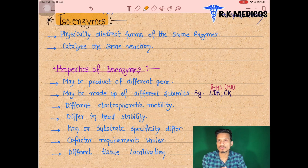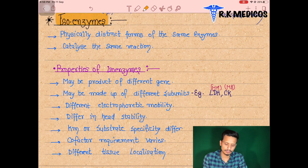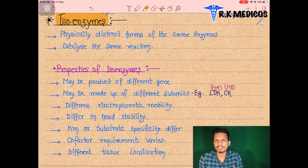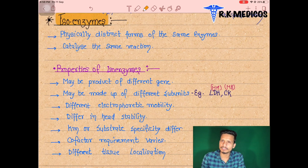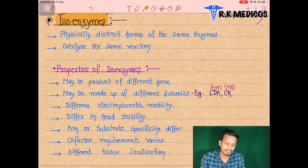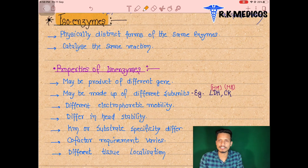Clinical enzymes is a very important topic for future doctors and for diagnostic criteria. Suppose a patient is having different types of diseases like myocardial infarction in the heart, or liver inflammation like hepatitis, or injuries in different parts of the body — all these can be diagnosed using isoenzymes.